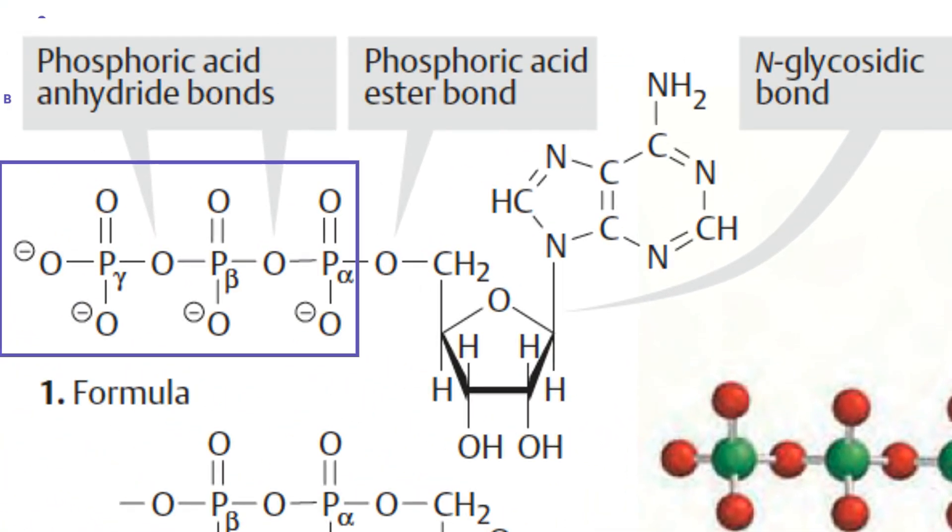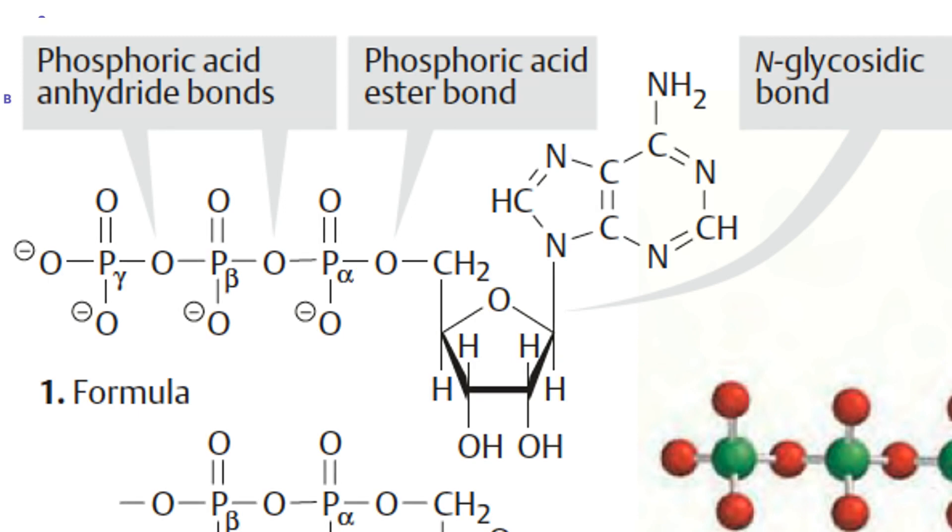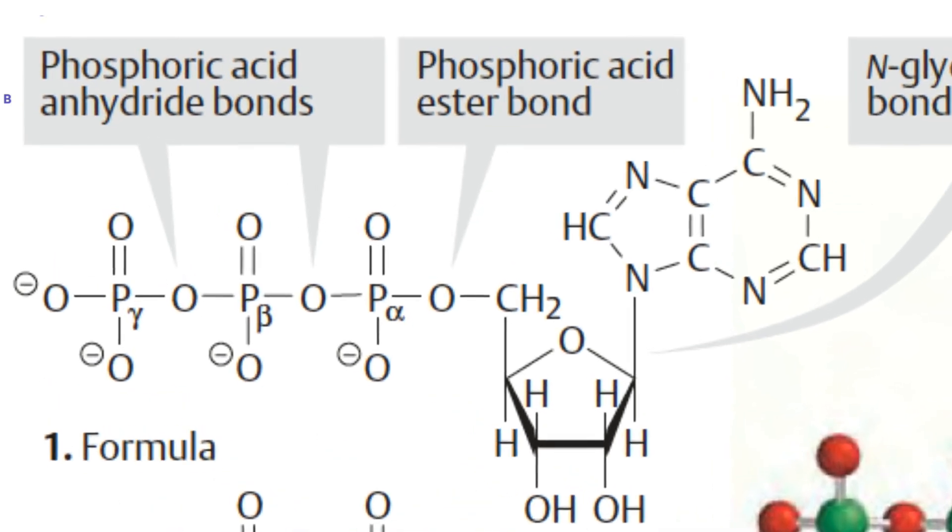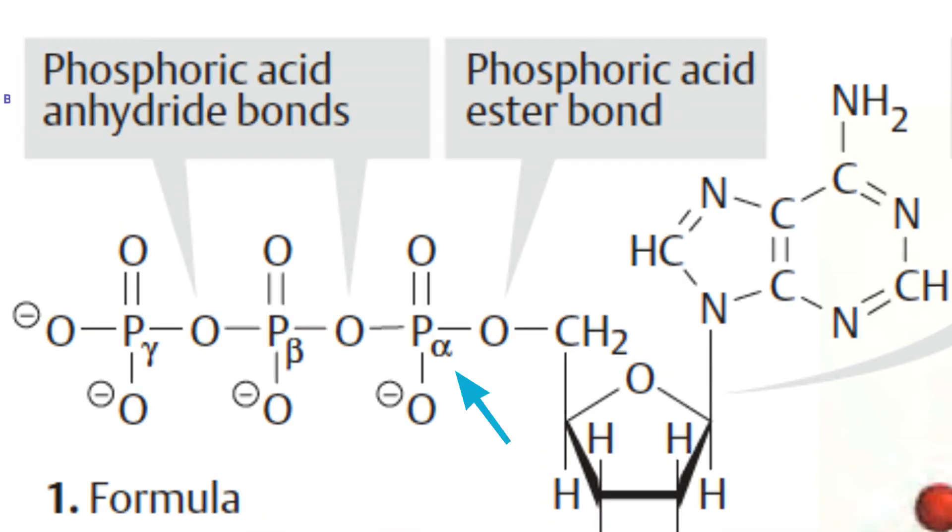The structure of ATP reveals a chain of three phosphate residues is linked to the 5'OH group of the nucleoside adenosine. These phosphate residues are termed alpha, beta, and gamma. The alpha phosphate is bound to ribose by a phosphoric acid-ester bond.